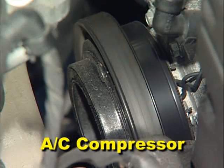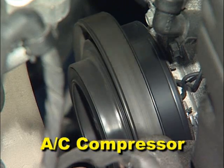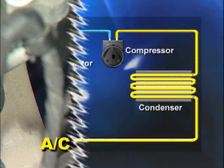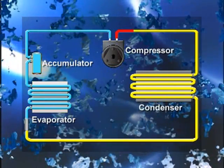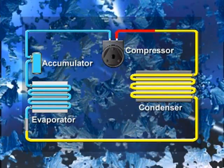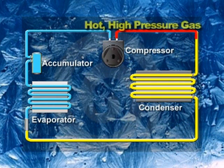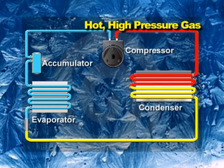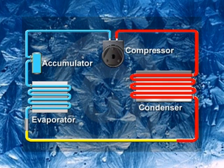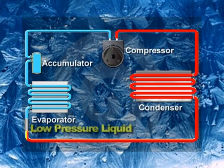The compressor is the only component with moving parts. It's a pump that compresses the refrigerant, turning the cold, low-pressure gas to a hot, high-pressure gas. As this hot refrigerant gas runs through the coils in the condenser, it gives off heat. The refrigerant then moves through a metering device, where it becomes a low-pressure liquid.